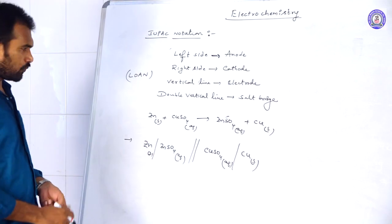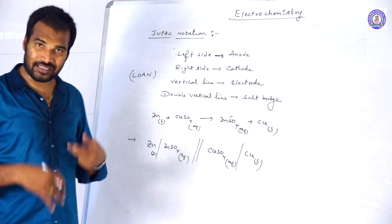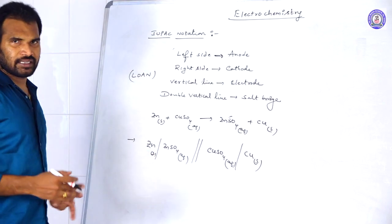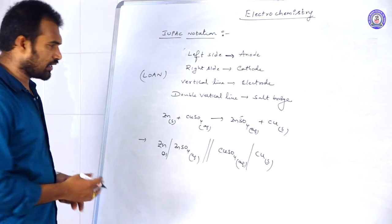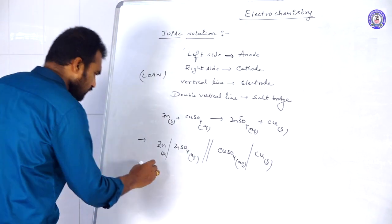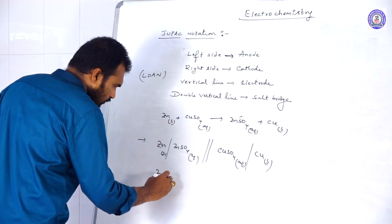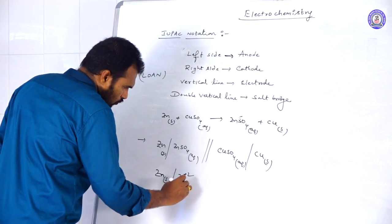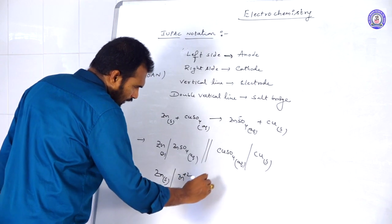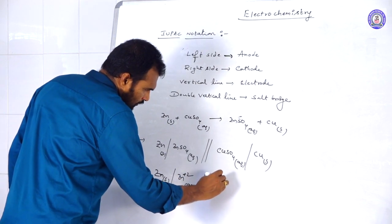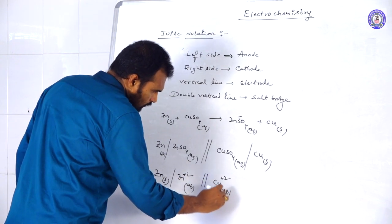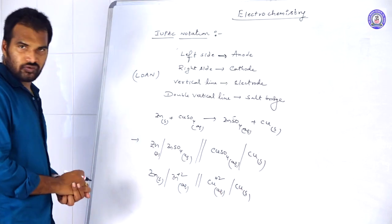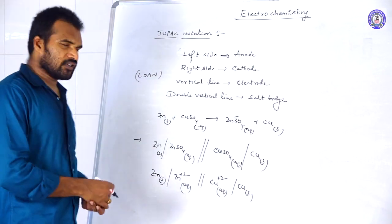This is the IUPAC representation of the galvanic cell. Since sulfate ion is a spectator ion, there is no need to represent spectator ions. You can also write it as: Zn(s) | Zn²⁺(aq) ‖ Cu²⁺(aq) | Cu(s). In this form also, we can represent the cell.